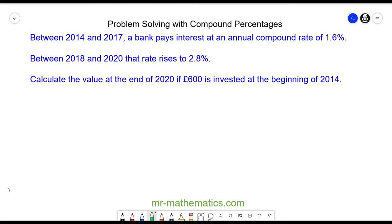Hello, in this question £600 is invested between 2014 and 2020. From 2014 to 2017, the interest rate was 1.6% compound interest, which has an overall percentage value of 101.6%. We can write this as a multiplier by dividing it by 100 to make 1.016.